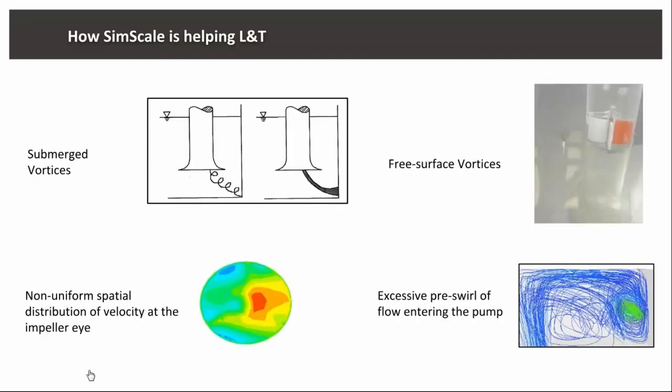Talking about today's webinar — there are certain fluid phenomena which should be avoided in sumps designed for lifting water from one place to another. The first is submerged vortices, which must be avoided and can be identified through CFD — they are represented by streamlines like a spring. The second are free surface vortices, which form while the pump is in operation and must be avoided. The third is non-uniform spatial distribution of velocity at the pump bell mouth inlet, and the fourth is excessive pre-swirl of flow entering the sump.